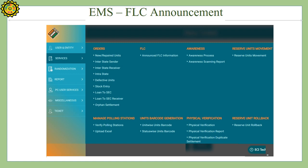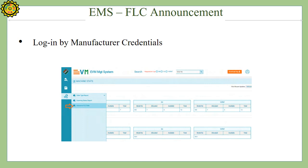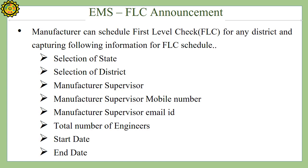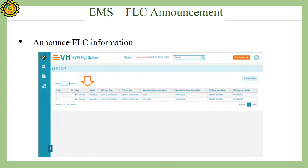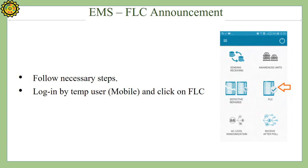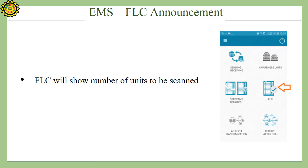The FLC announcement page is shown on the screen. Login is done using manufacturer credentials. The manufacturer can schedule FLC for any district and capture the following information: selection of state, selection of district, manufacturer supervisor, supervisor mobile number, supervisor email ID, total number of engineers, start date, and end date. Login can also be done using DO credentials. After the FLC announcement, login is done by the temporary user, who clicks on FLC. FLC will show the number of units to be scanned.